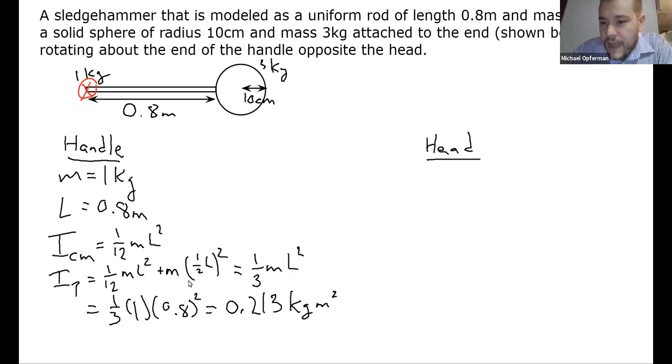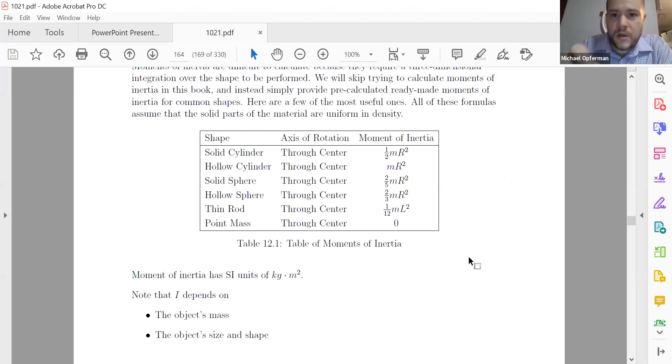Now next we've got the head of the hammer. So the head of the hammer has a mass of 3 kg. And it has a radius of 0.1 meters, 10 centimeters. And so the next thing we would need to do is look up in the table of moments of inertia, what is the moment of inertia for a solid sphere.